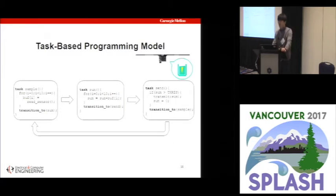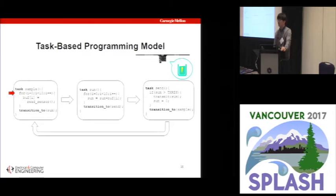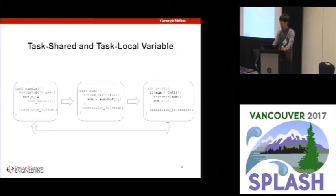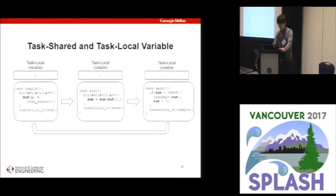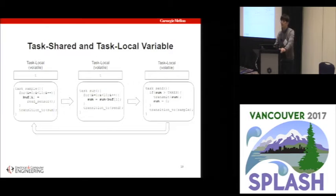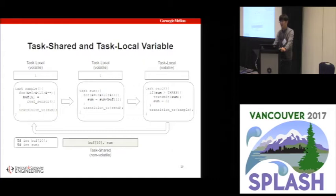With that guarantee, when a power failure occurs in the middle of a task, the system simply restarts from the beginning of that task on reboot, preserving progress at the granularity of tasks. Each task has task-shared and task-local variables. For example, the loop variable i is initialized and used only within a task, so it is task-local and can effectively be volatile. However, the array buff and the variable sum are read and written across multiple tasks, so the programmer annotates them as task-shared in a global region, and these are allocated in non-volatile byte-addressable memory.